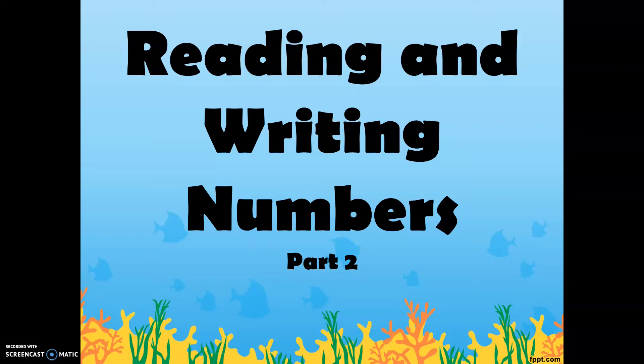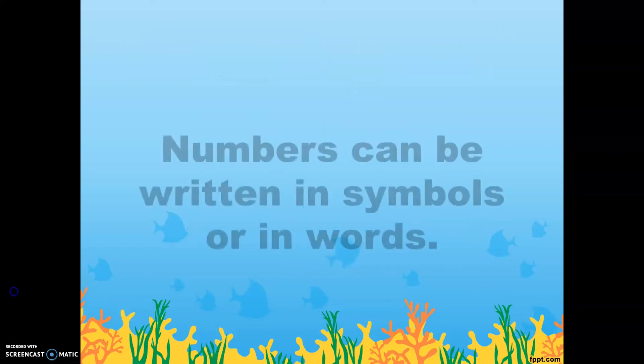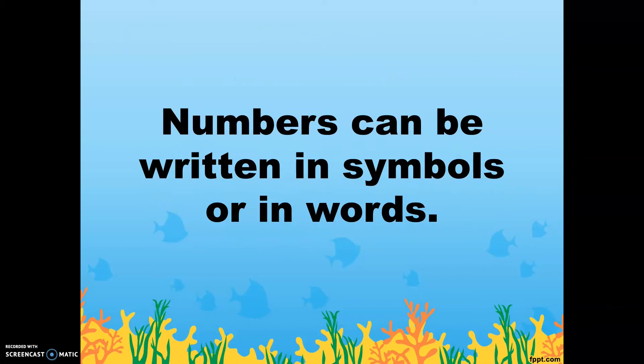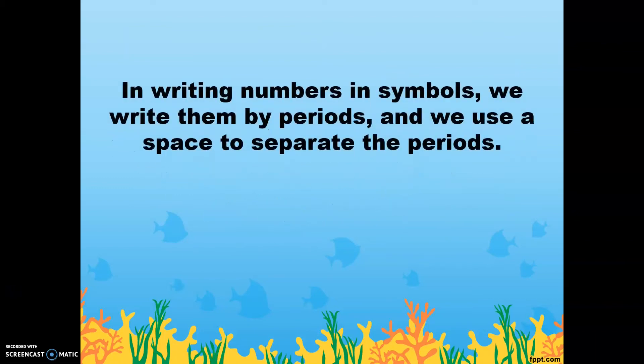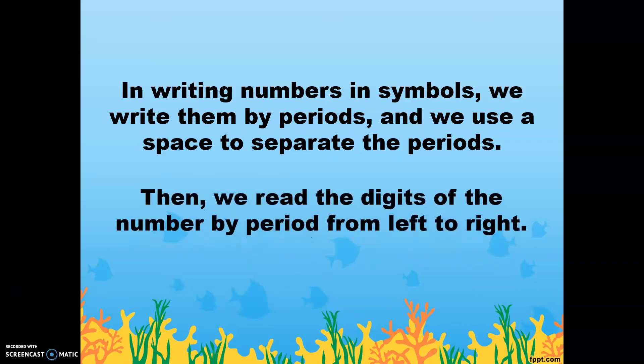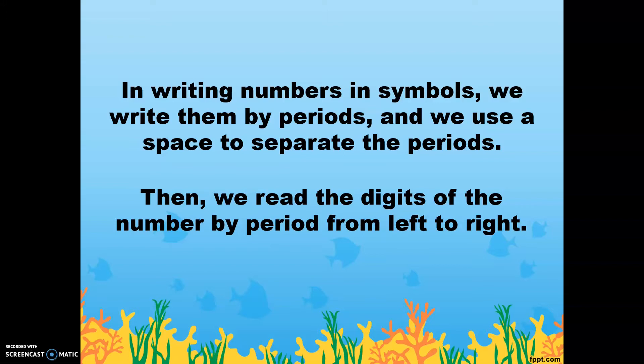Okay, let's find out. Numbers can be written in symbols or in words. In writing numbers in symbols, we write them by periods and we use a space to separate the periods. Then, we read the digits of the number by period from left to right.